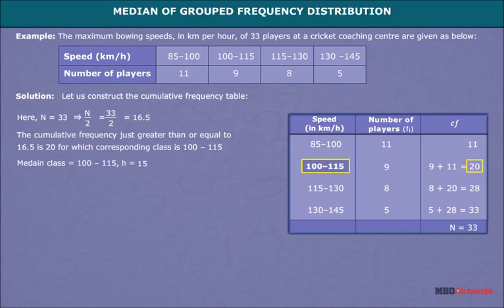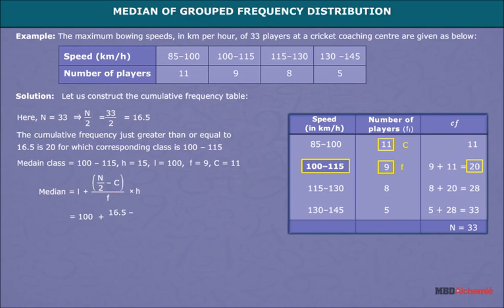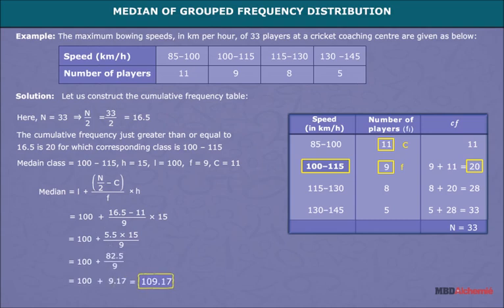From the median class 100 to 115: h is equal to 15, L is equal to 100, f is equal to 9, and c is equal to 11. Applying the formula, Median = L + [(n/2 − c) / f] × h. After putting all these values we get 109.17 as the median.